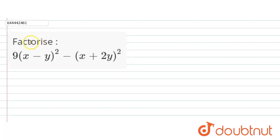Hello everyone, here the question is: factorize 9(x - y)² - (x + 2y)².